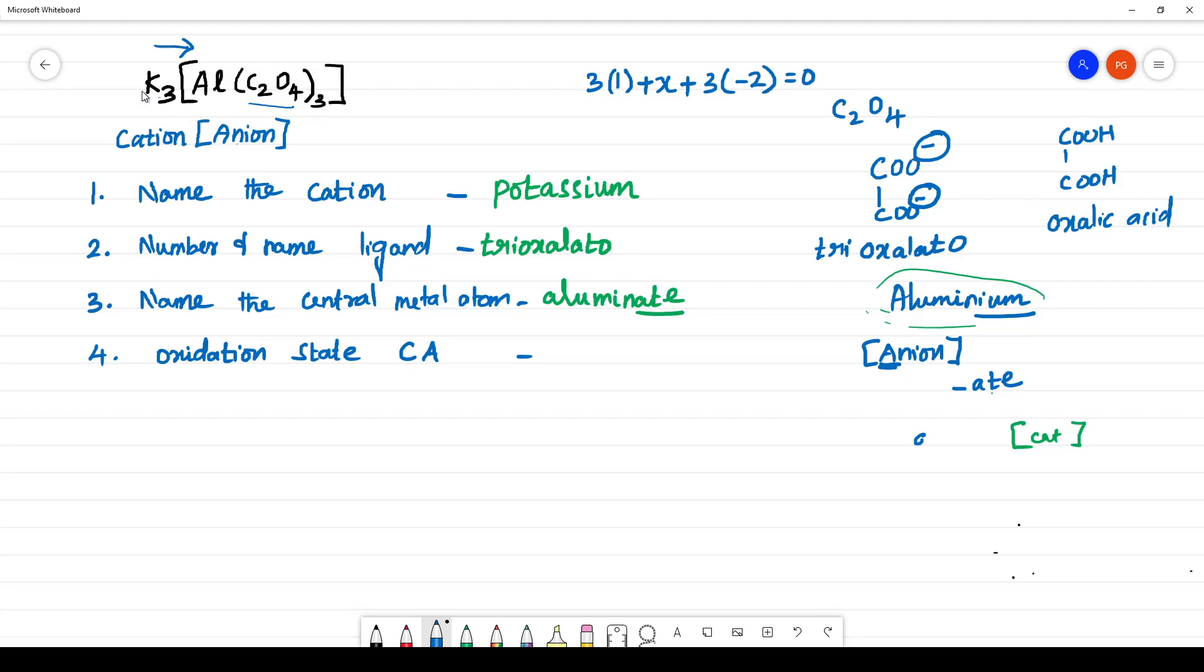Which is equal to 0. The total charge of the complex, everything is 0. Here it is 3 plus x minus 6 is equal to 0. So x is equal to 3.